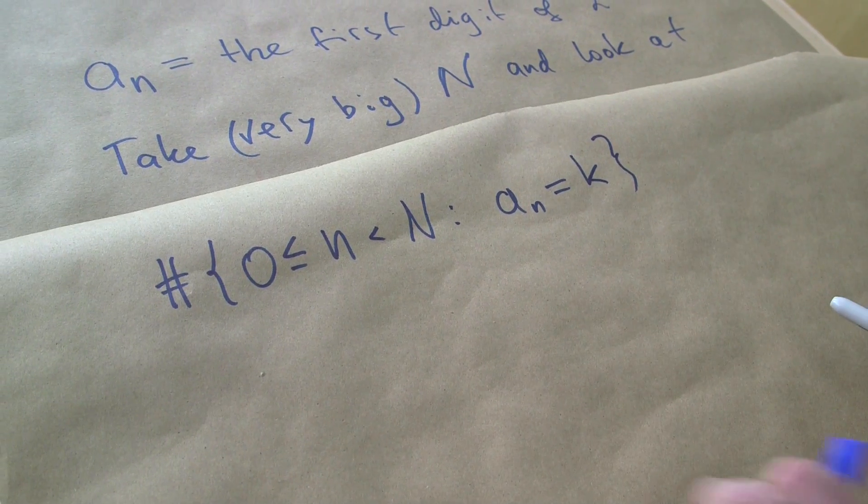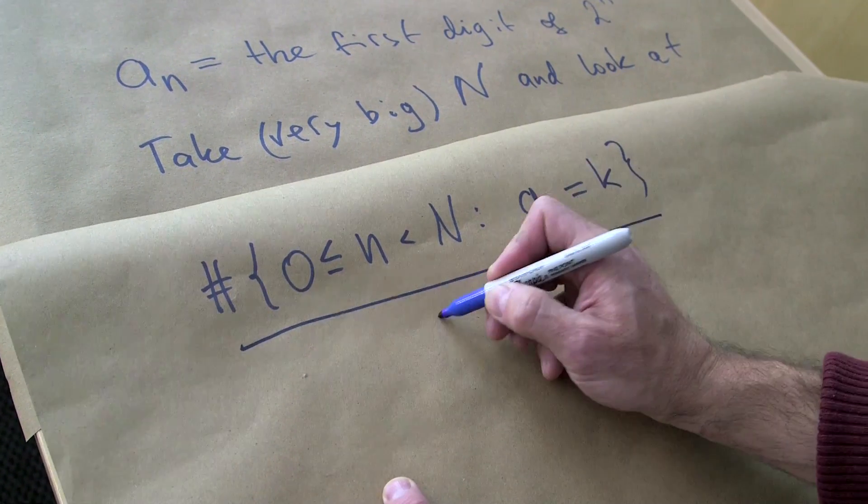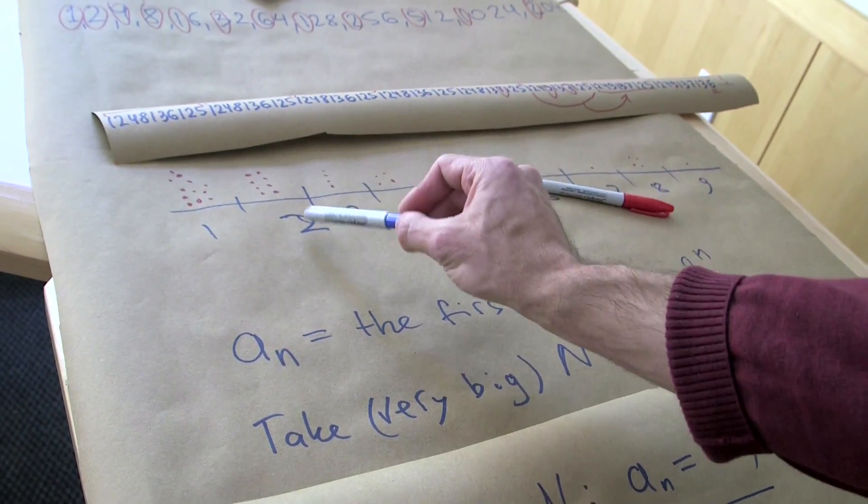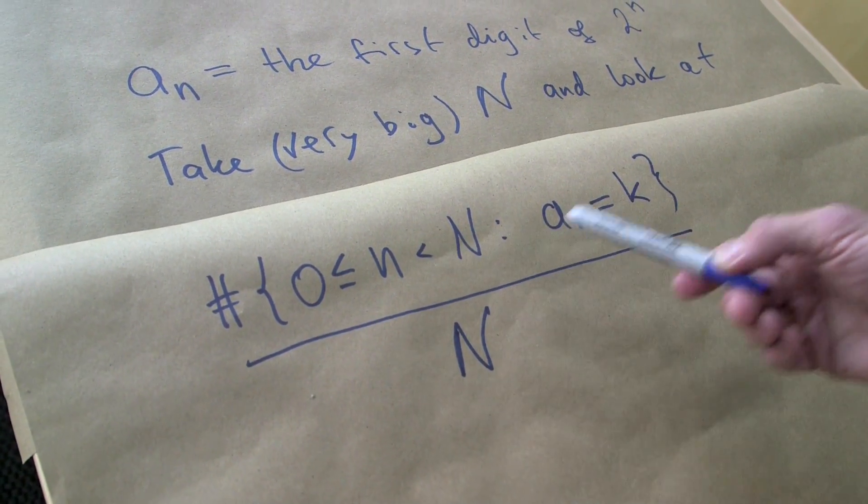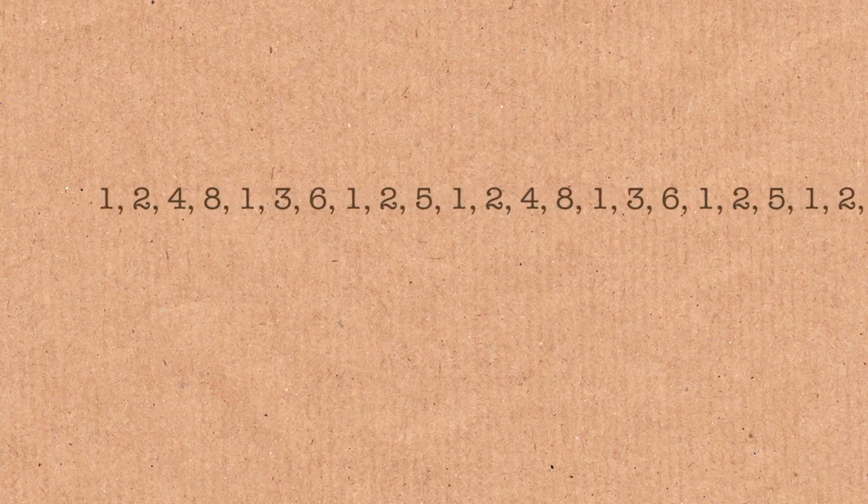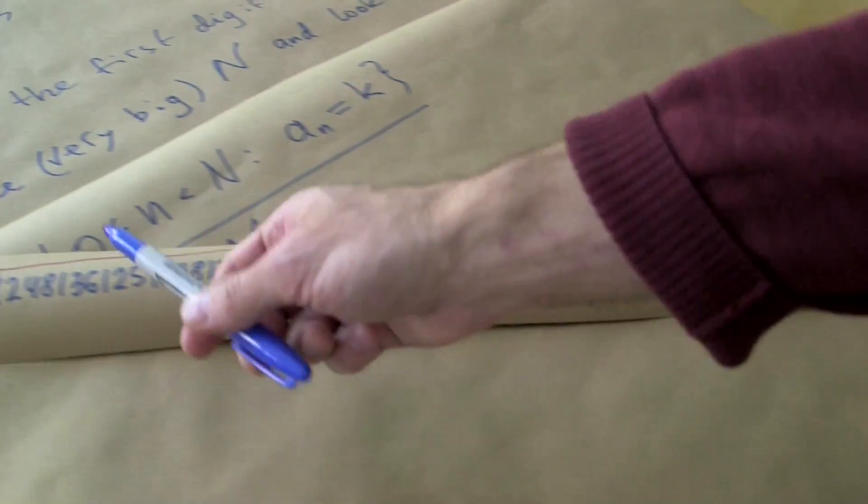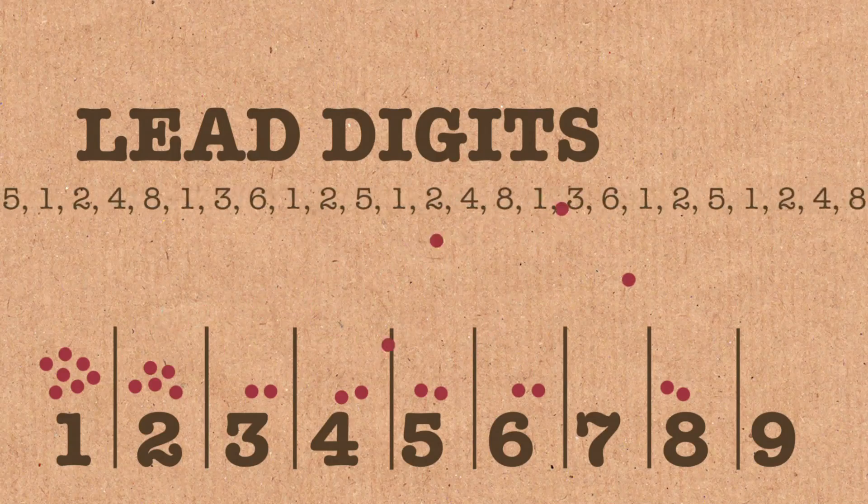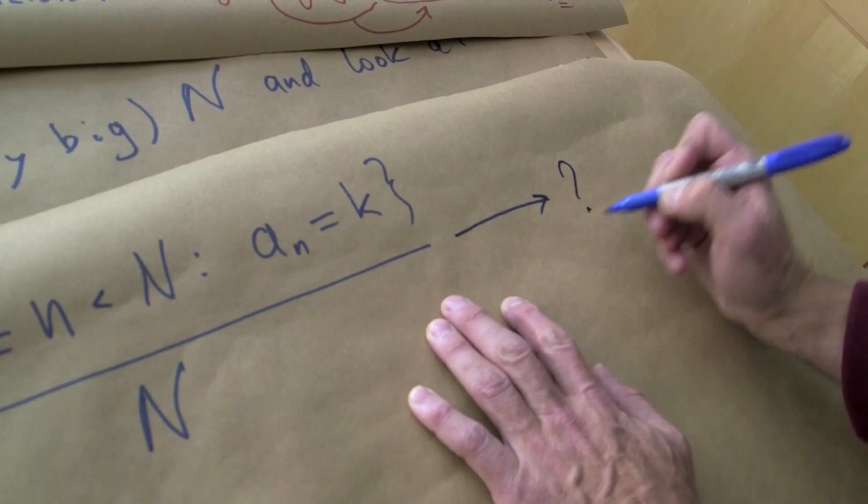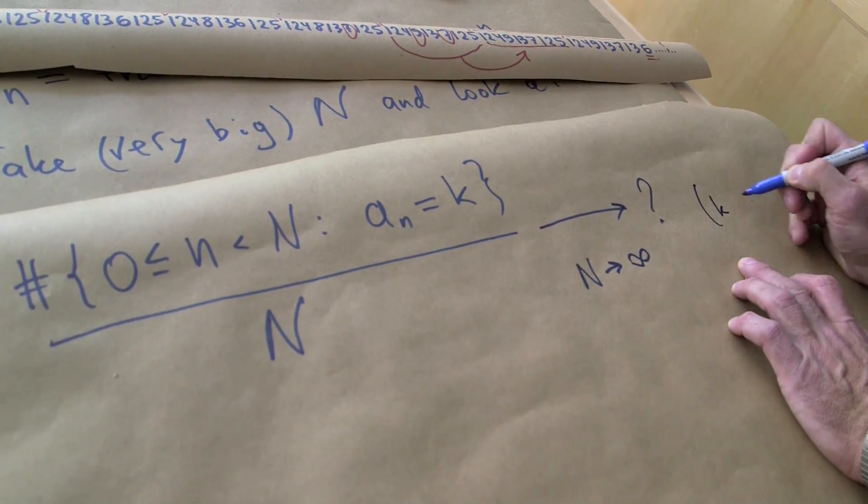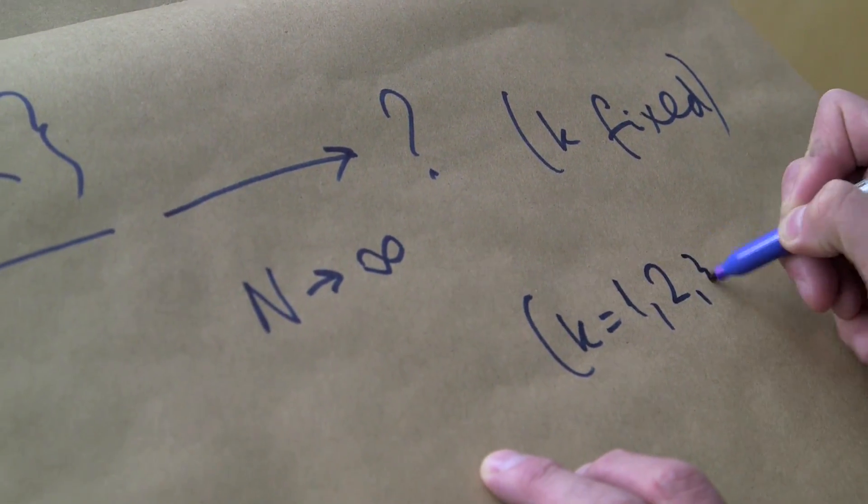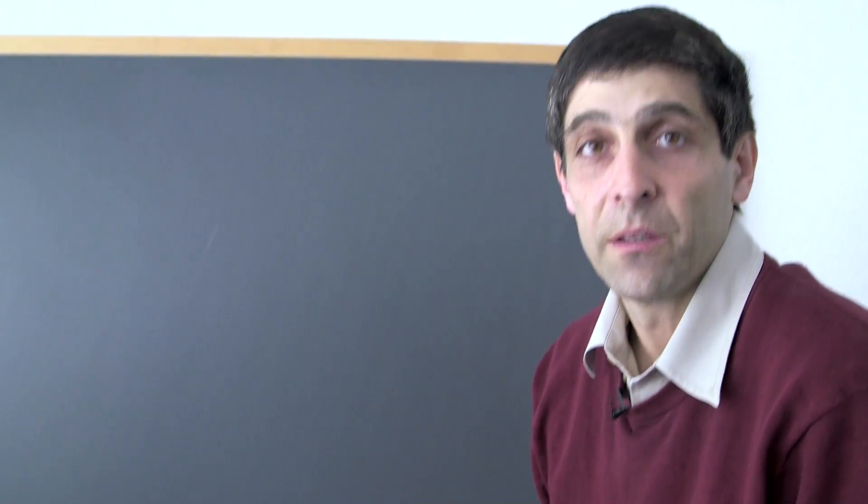Okay and then we look, we take very big natural number n and look at the number of little n say between 0 and n such that this a sub n is equal to k where this k could be 1 or 2 or 3 or 4 or 9. Okay so what is it if n is very big and specifically let me take this number and divide by n and this is going to be the probability you hit 2 if k is 2 or 4 if k is 4. Okay so out of these numbers what is the proportion of the ones that have a value k?